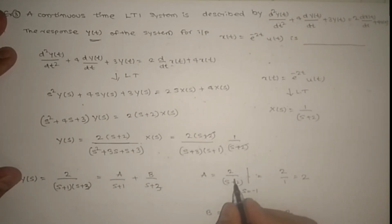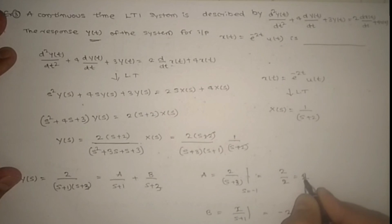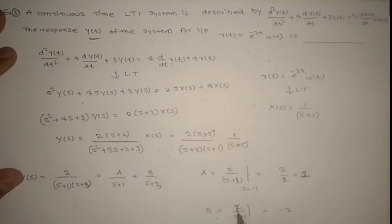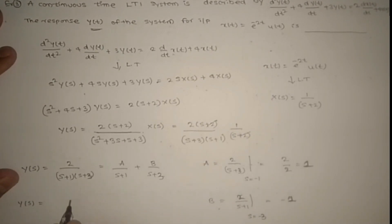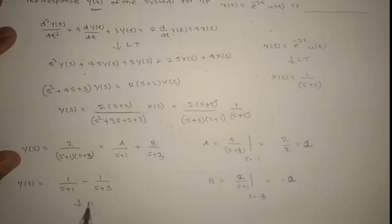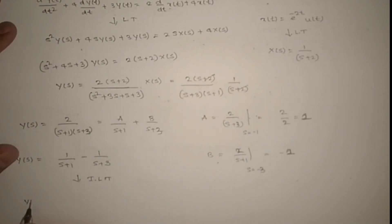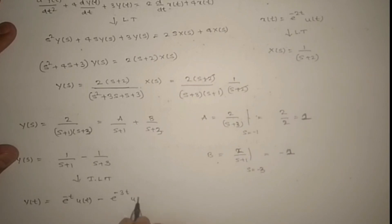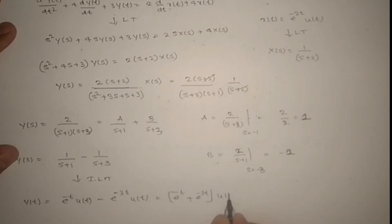Finding A: A = 2/(s+3) at s = −1 gives 2/2 = 1. Finding B: B = 2/(s+1) at s = −3 gives 2/(−2) = −1. Therefore Y(s) = 1/(s+1) − 1/(s+3). Applying inverse Laplace transform: y(t) = [e^(−t) − e^(−3t)]·u(t).